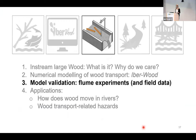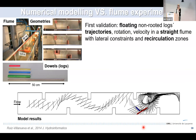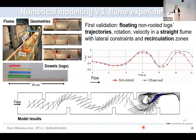Since we started developing this model more than 10 years ago, we used observations to validate it. The first validation was in a very simple setup — a flume, a straight small channel with some obstacles and constraints to generate recirculation zones. We focused on the trajectories of floating cylinders and compared their trajectories, rotation, and velocities. As shown here, the model was capturing the behavior observed in the flume.